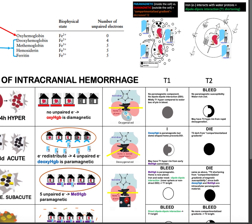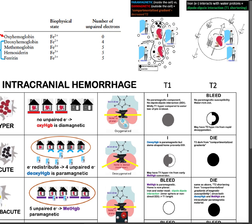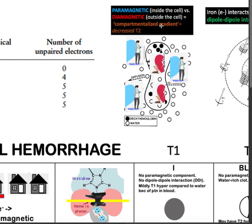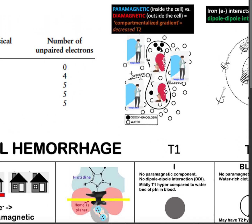So when the inside of the cell is paramagnetic while the outside of the cell is diamagnetic, there is what we call a compartmentalized gradient, which would reflect as decreased T2 signal.